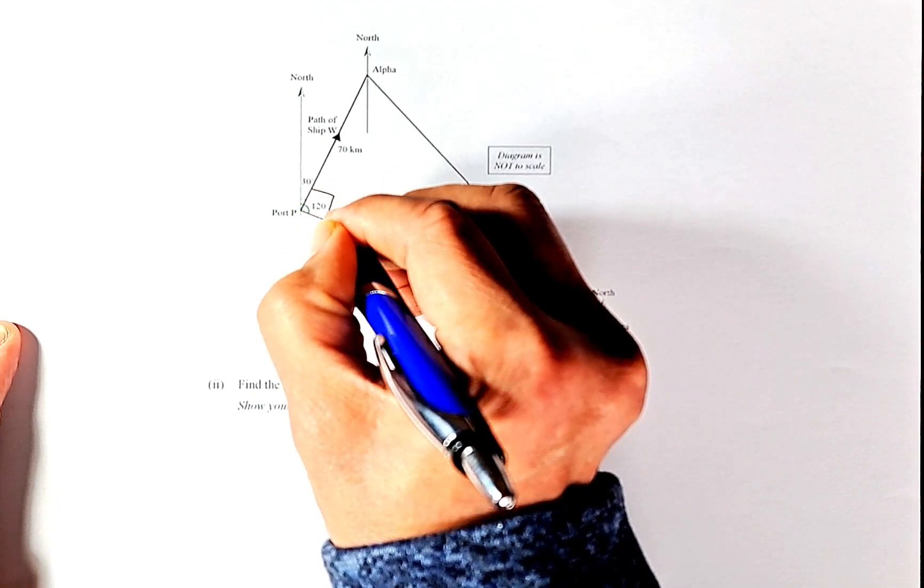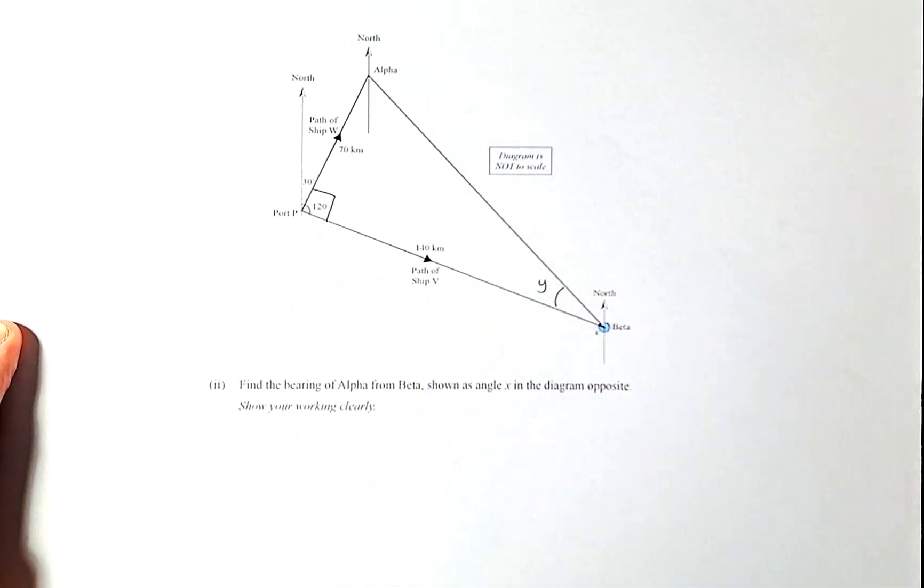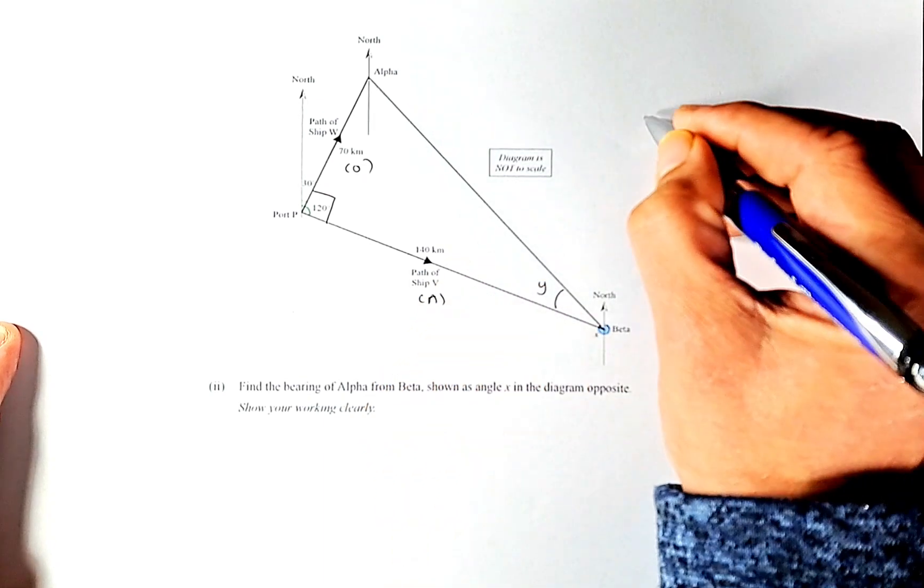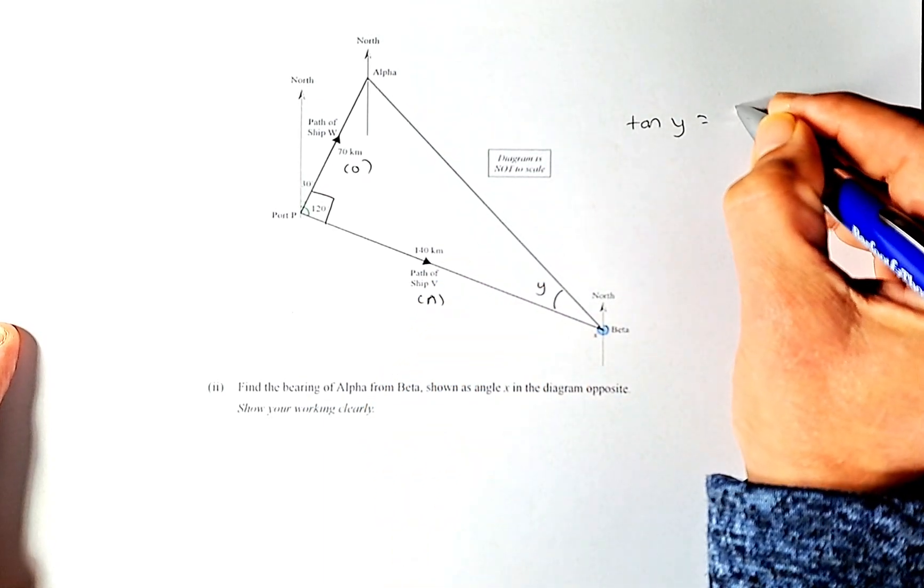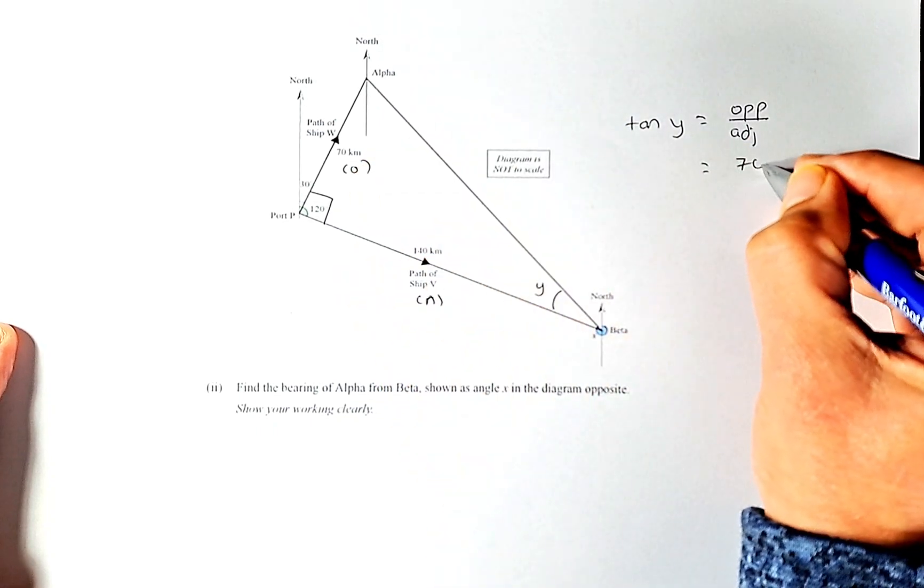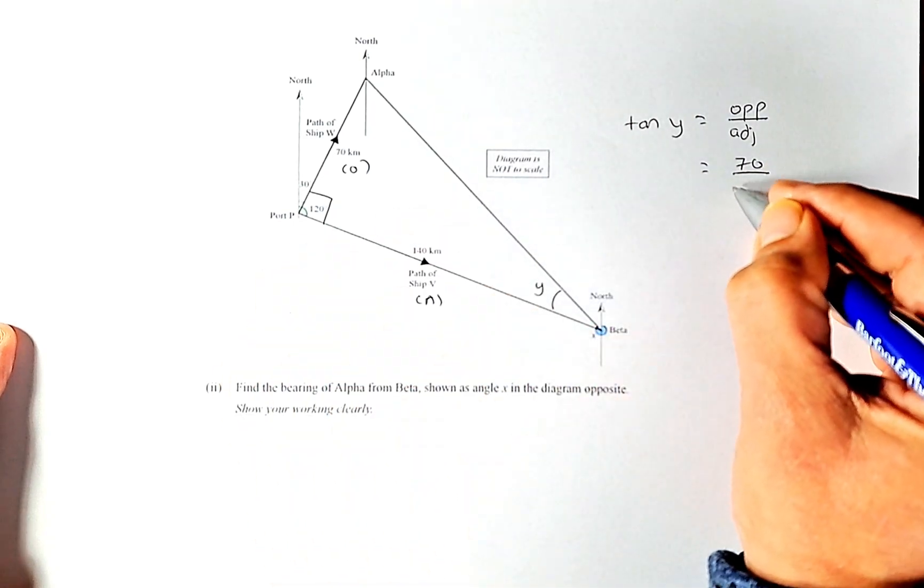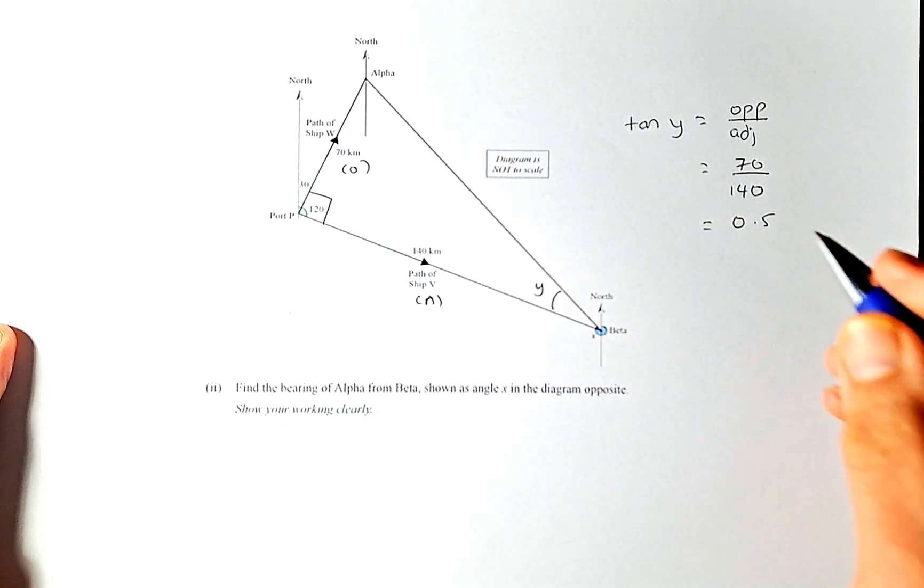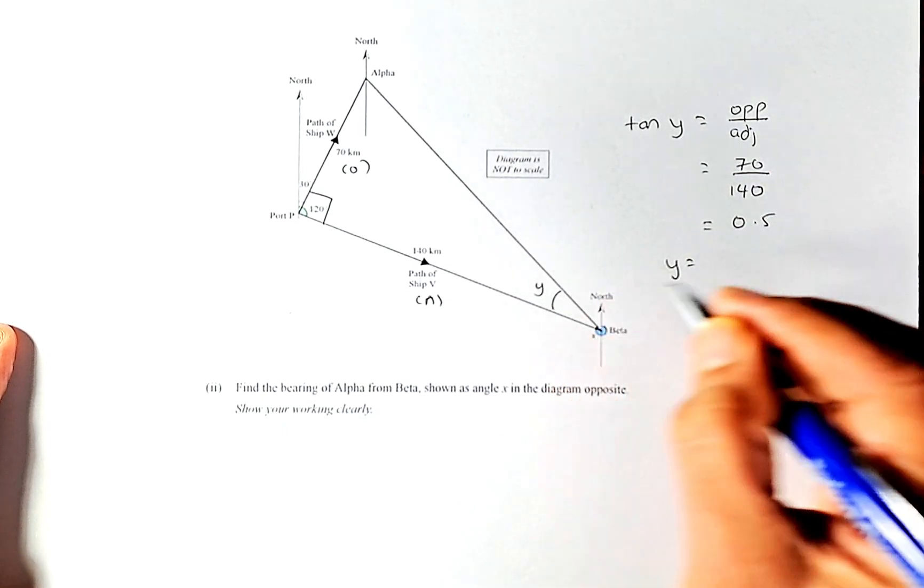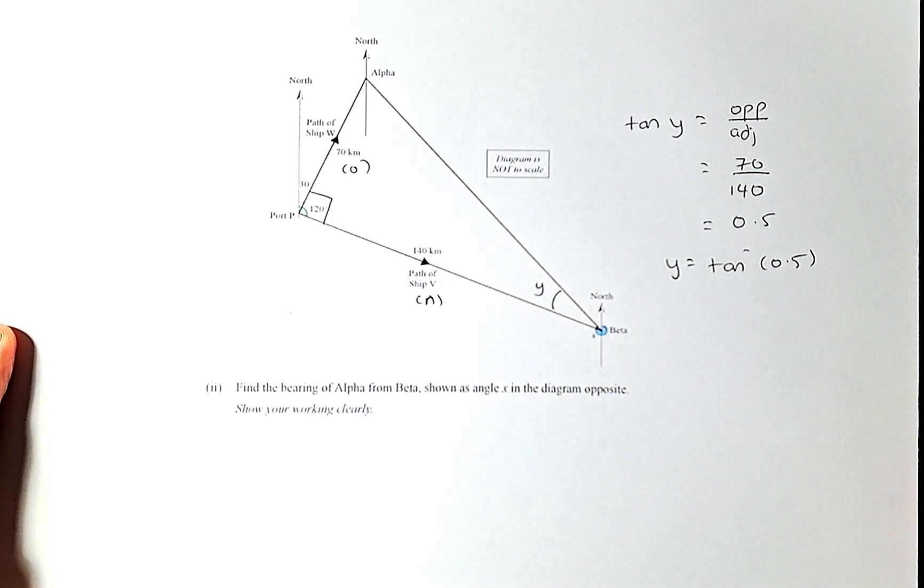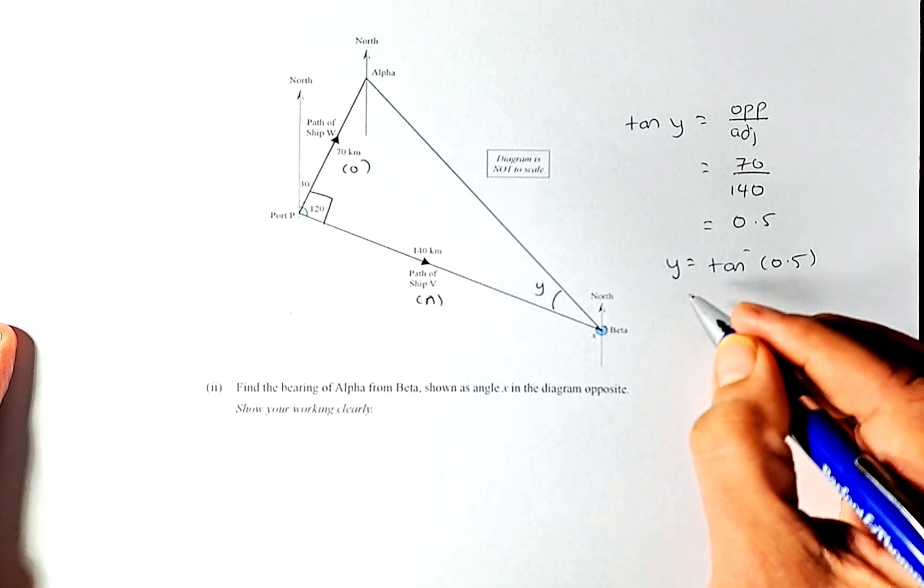To find angle y, there's 90 degrees here so we can use your trig ratio. This is your opposite and this is your adjacent, so we use tangent theta. Tangent y equals opposite over adjacent. The opposite is going to be 70 and the adjacent is 140. You put in the calculator and it's going to be half or 0.5. To get your angle y, take tangent inverse of 0.5 and the answer should give you 26.57 degrees.